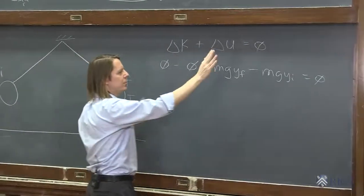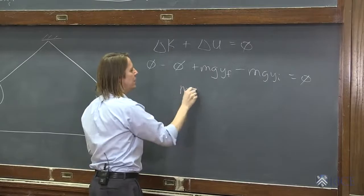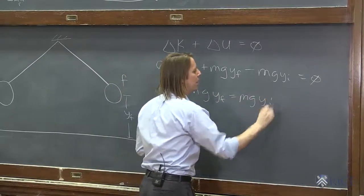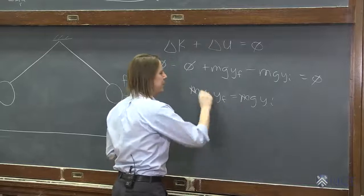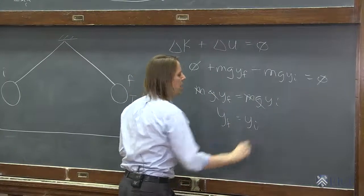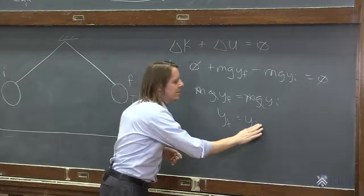So you can see where we're headed here. 0, 0, 0. Bring this over here. And you get mgyf equals mgyi. Cancel, cancel, cancel, cancel. And you get that it must end at the same height that it started.